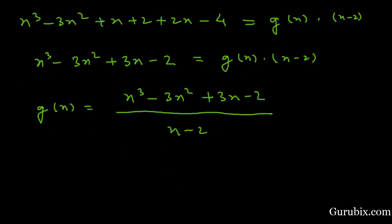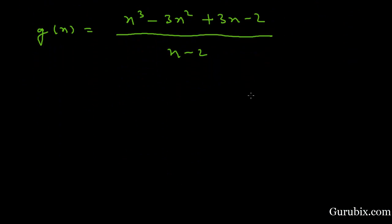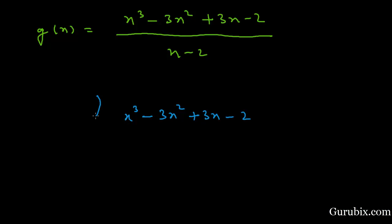This means we shall now divide x cubed minus 3x squared plus 3x minus 2 by x minus 2 using the long division method. We shall write the dividend x cubed minus 3x squared plus 3x minus 2 in the middle of the page and divide it by x minus 2.